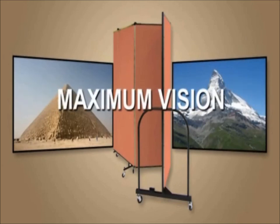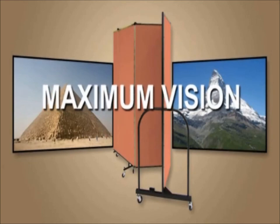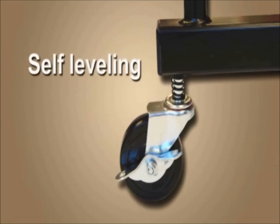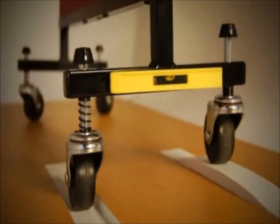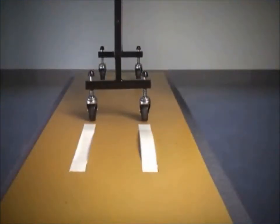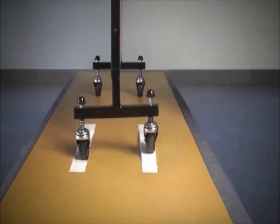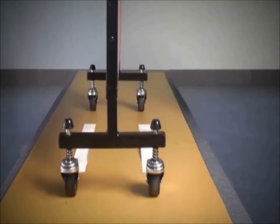In addition, the corner casters on the end support are self-leveling to help keep the divider both level and stable. We all know there is no floor that is perfectly level, and obviously a portable room divider will not be as stable if the casters do not adjust to the uneven areas of your floor accordingly. Self-leveling casters are a very desirable feature, as are properly spaced dual casters on the interior panels.